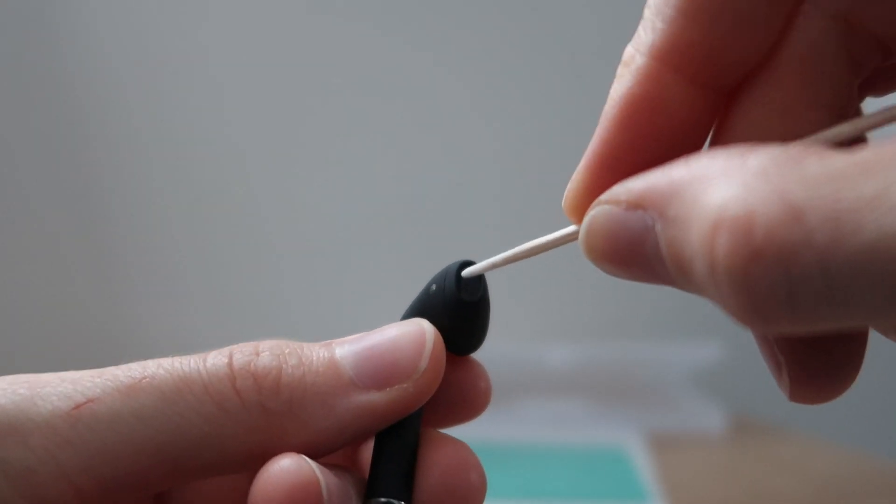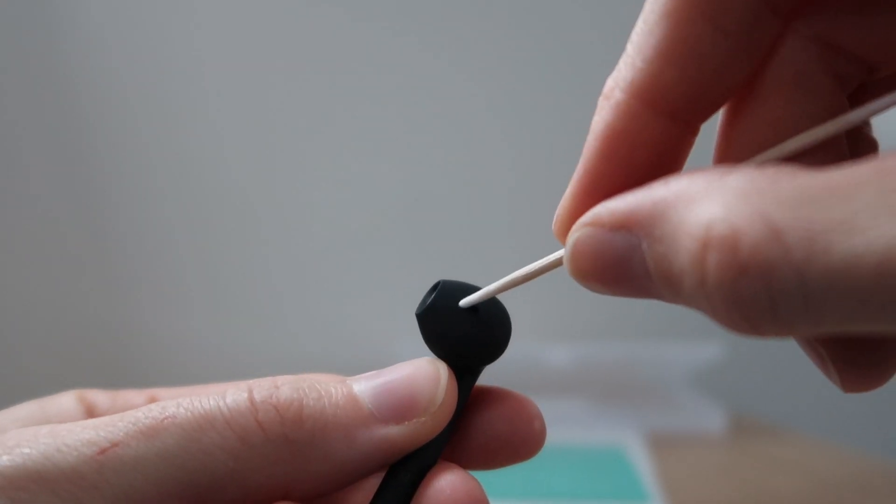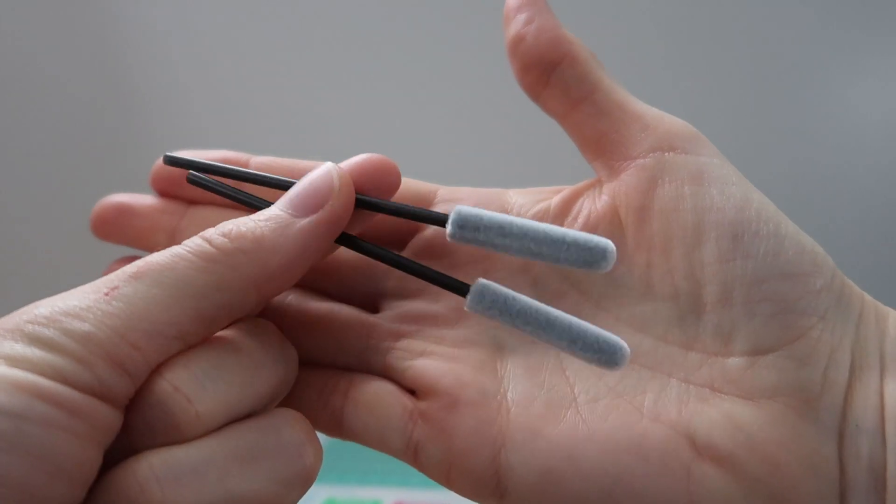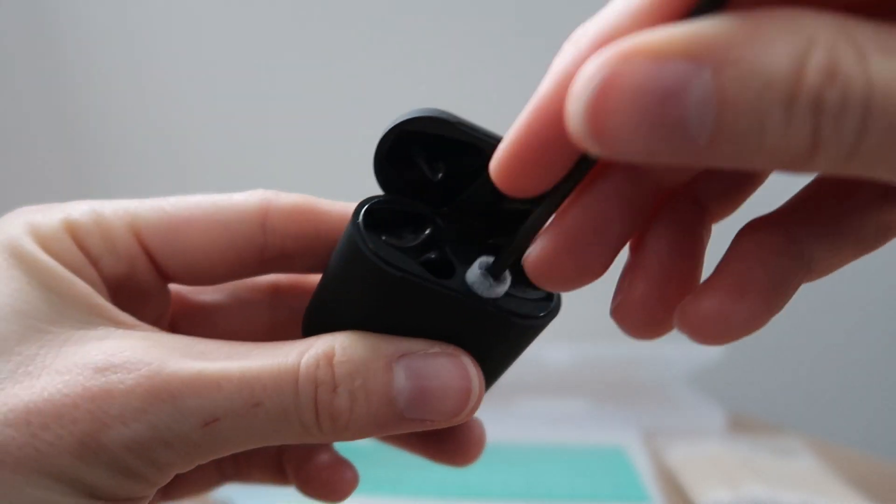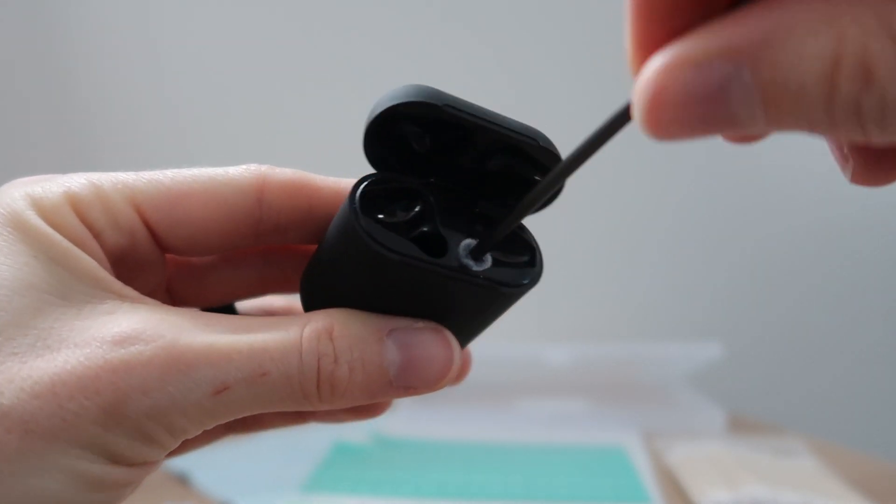It comes with 100 pointed cleaning sticks that are in a nice little baggie. In this bag, we have two flocking sponge sticks for cleaning out the dust and stuff. Look at that. Perfect fit.